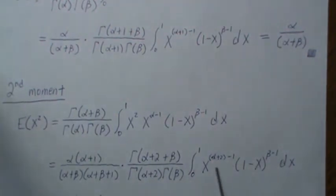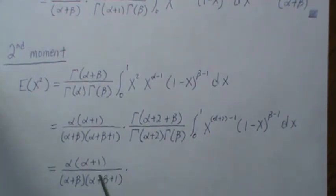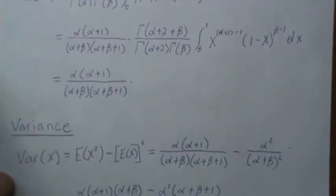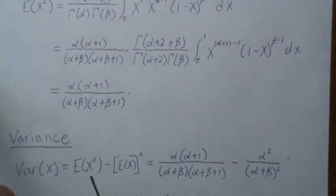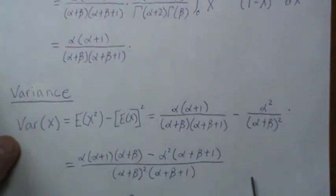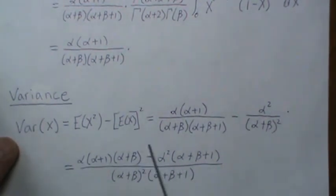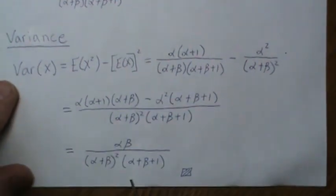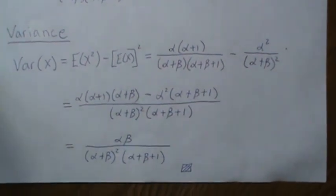To find the variance, we use the expected value of X squared minus the mean squared. We plug in the values we just calculated earlier, and that combines to be this. But then when you simplify that, it reduces to this, which is the variance of a beta distribution.